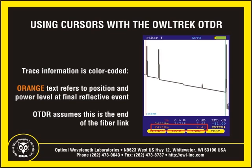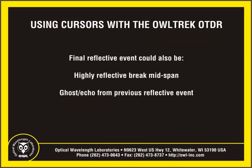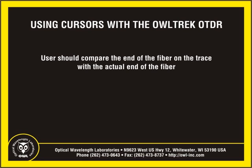Orange informational text refers to the position and power level of the final reflective event relative to the beginning of the trace. Most of the time, this refers to the end of the fiber. However, there are some scenarios where the final reflective event is not the actual end of the fiber — for example, a reflective break mid-span, or a ghost or echo from a previously highly reflective event. It is the responsibility of the technician to visually verify that the end of the fiber on the trace refers to the actual end of the optical fiber.